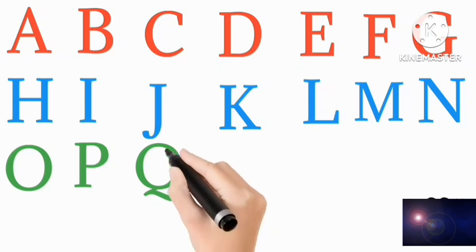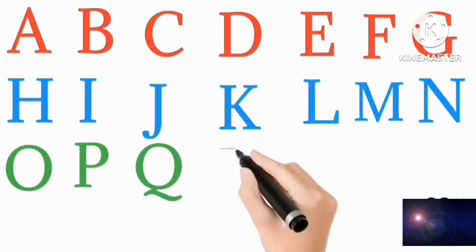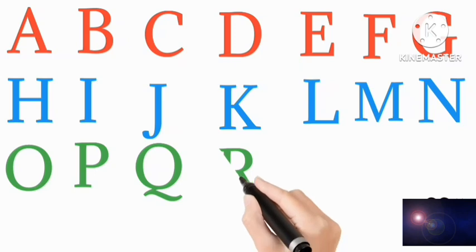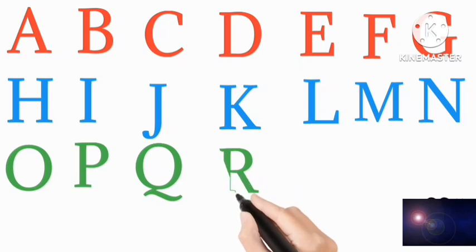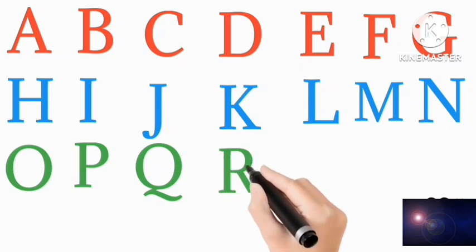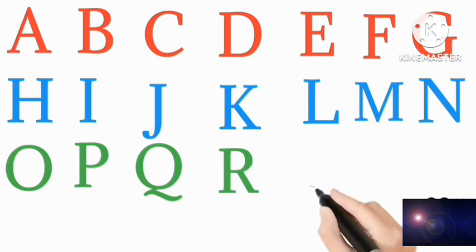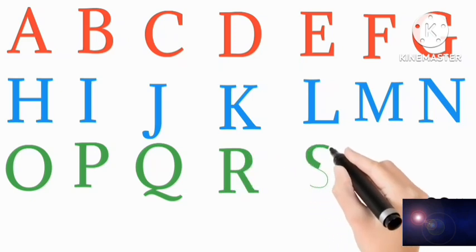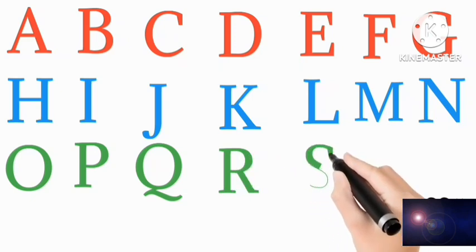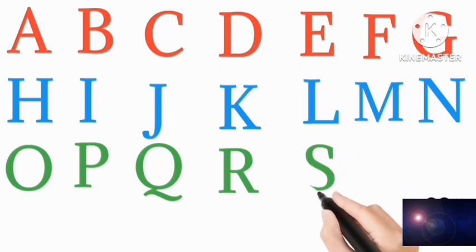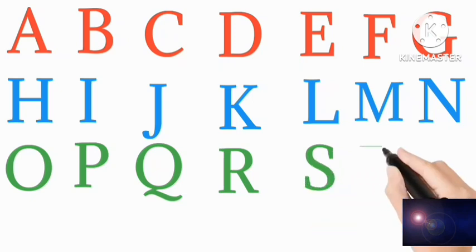Green color Q, Q for Queen. Green color R, R for Rabbit. Green color S, S for Sun.